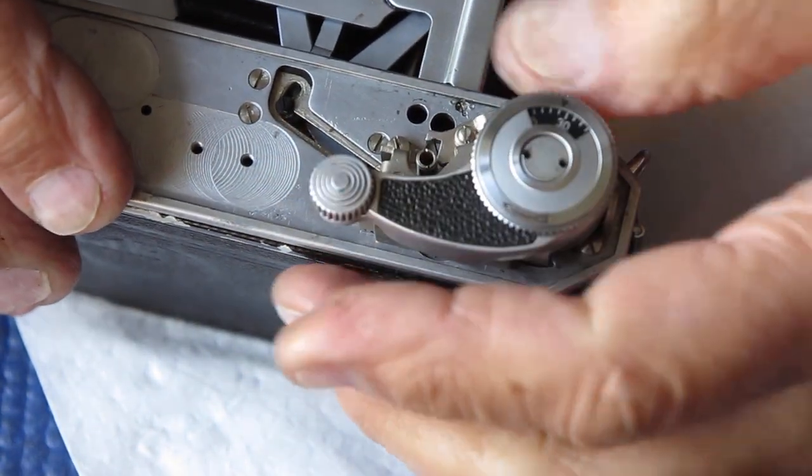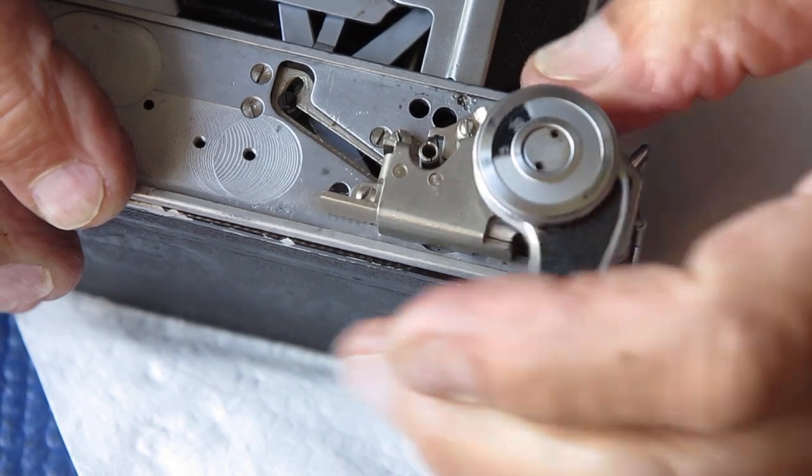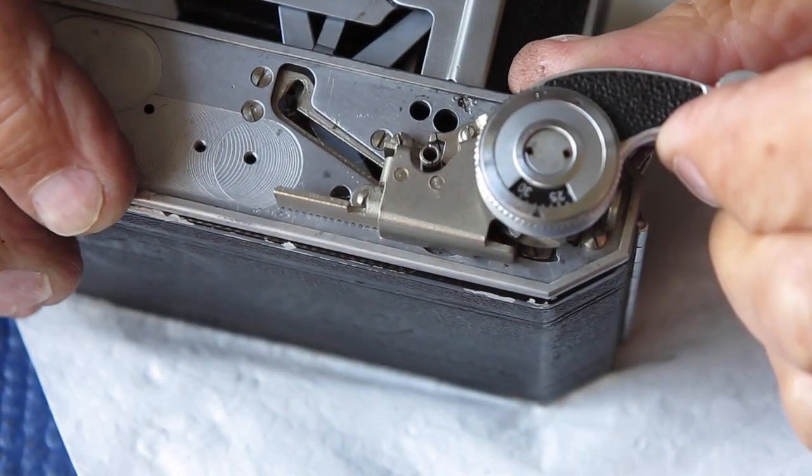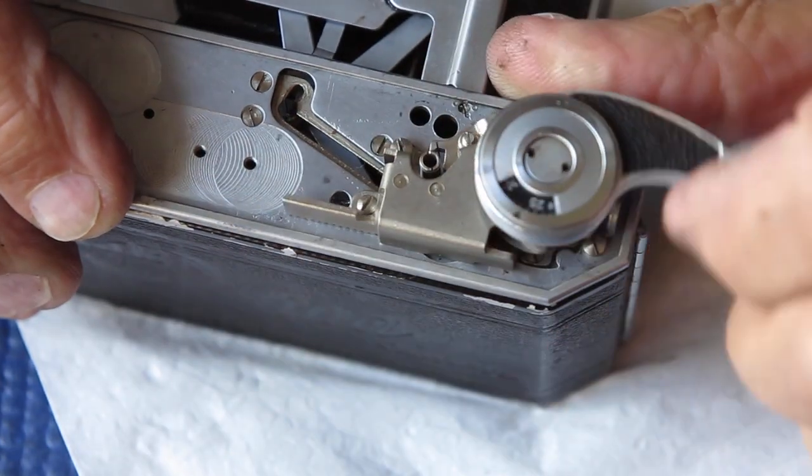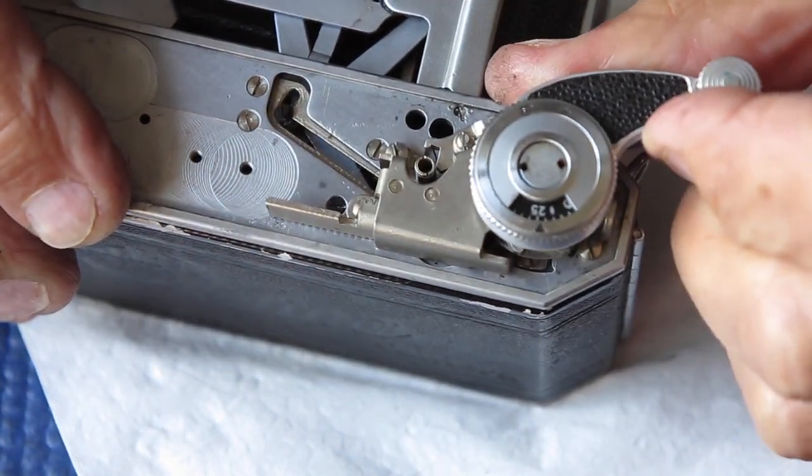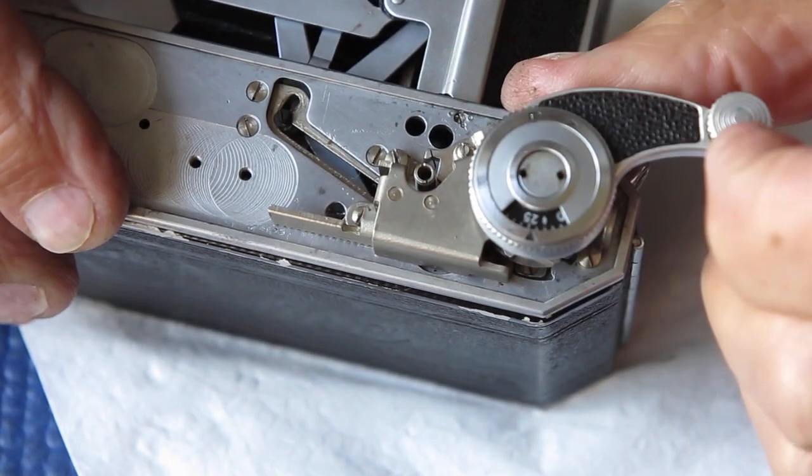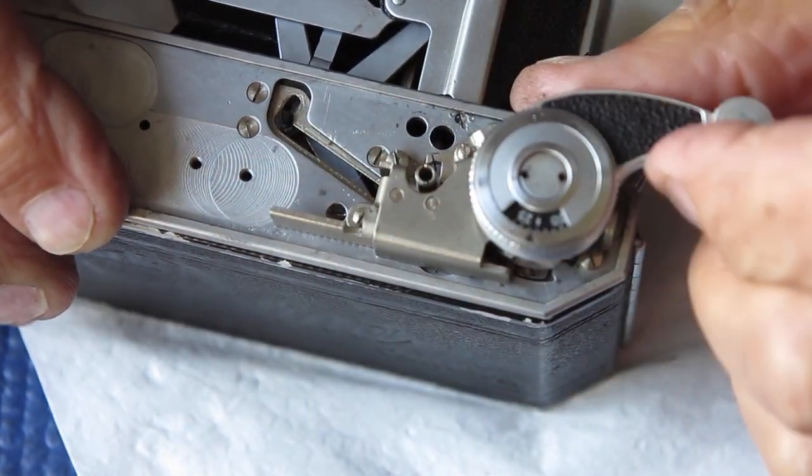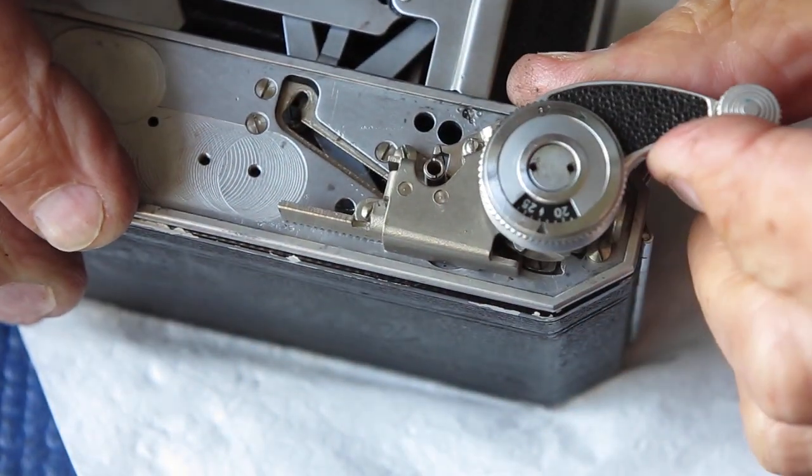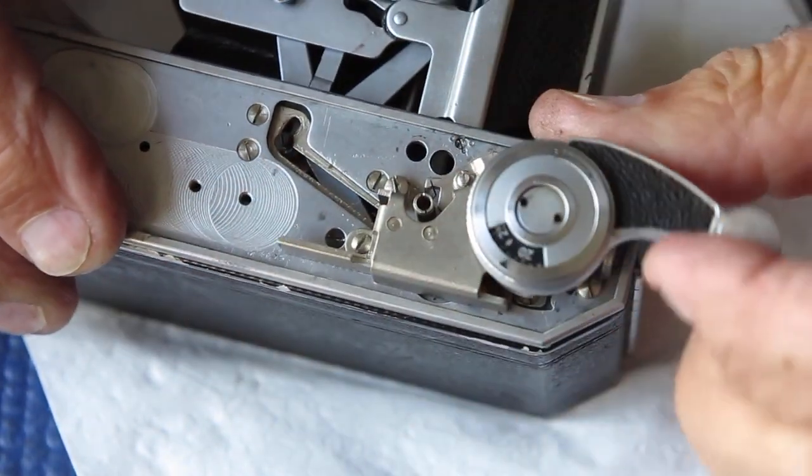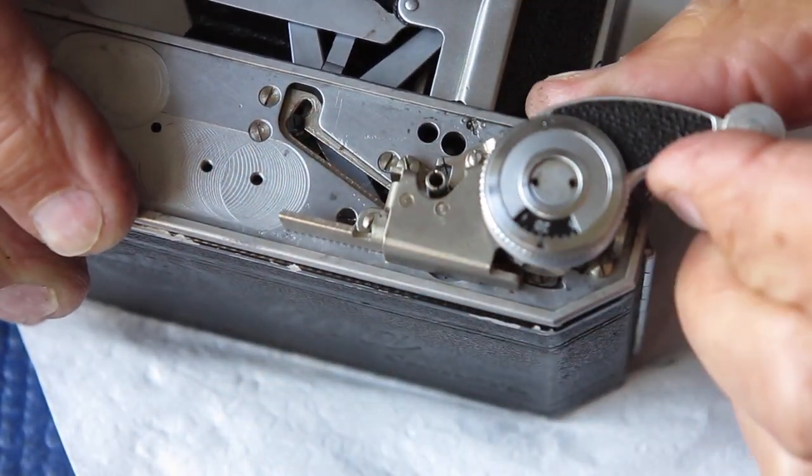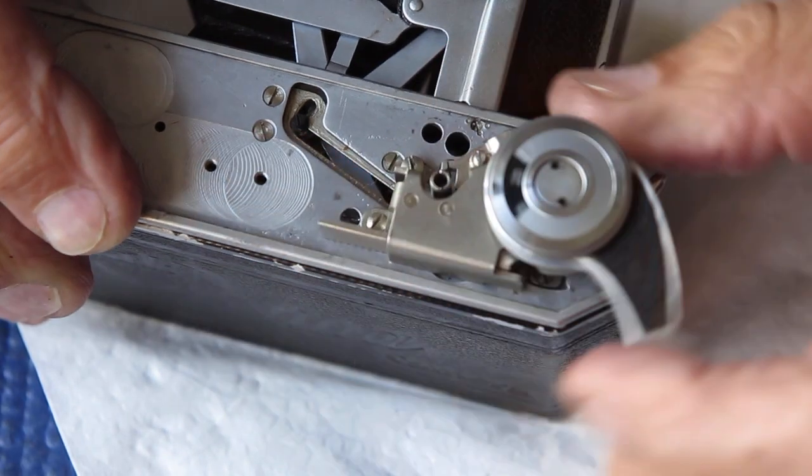If the counter spring or pawl is slightly bent or slightly incorrect, it may not push that action far enough forward to move the counter to the next position. I am going to revolve right through the frame counter and see if there is a spot where it doesn't move.